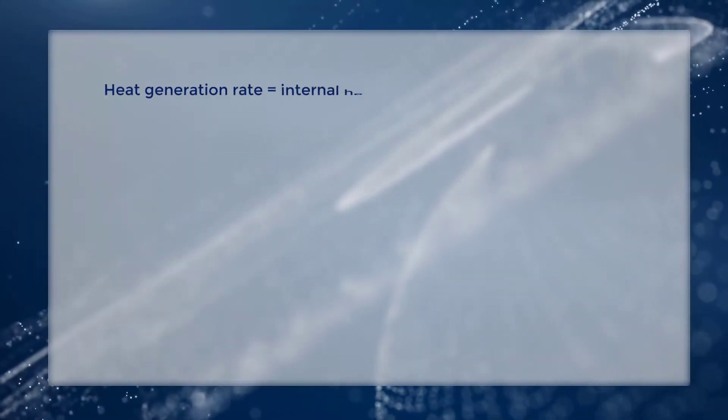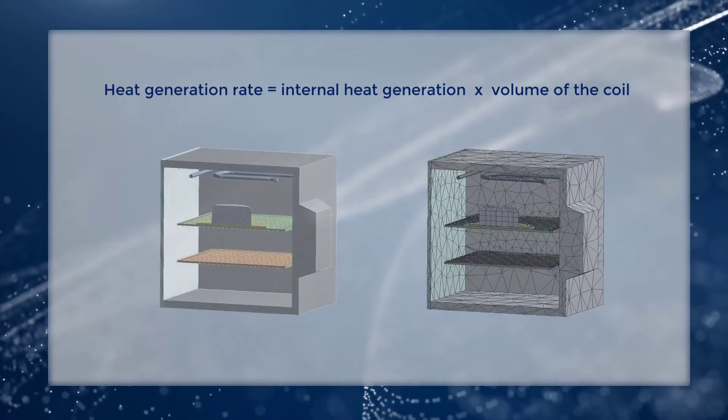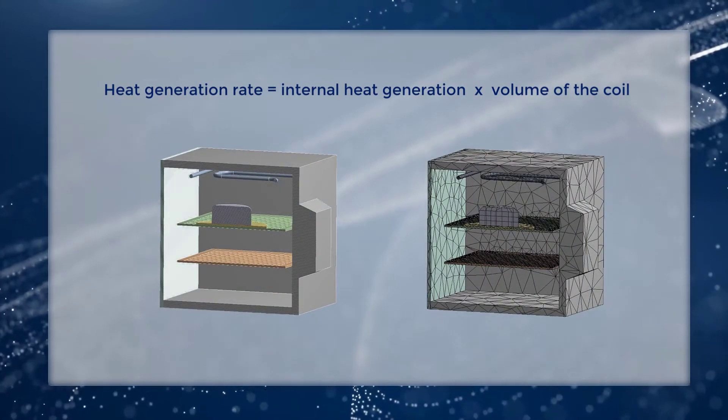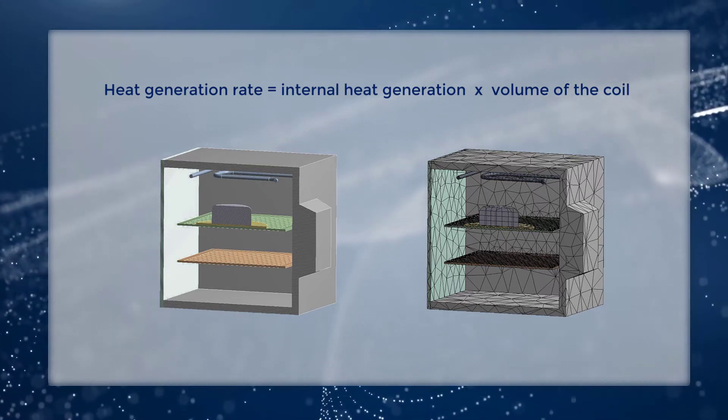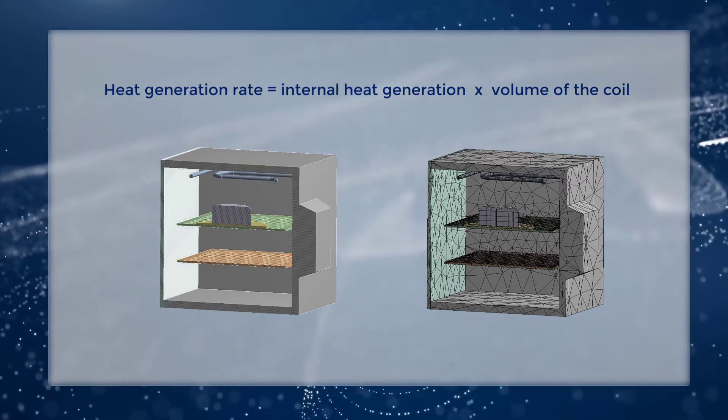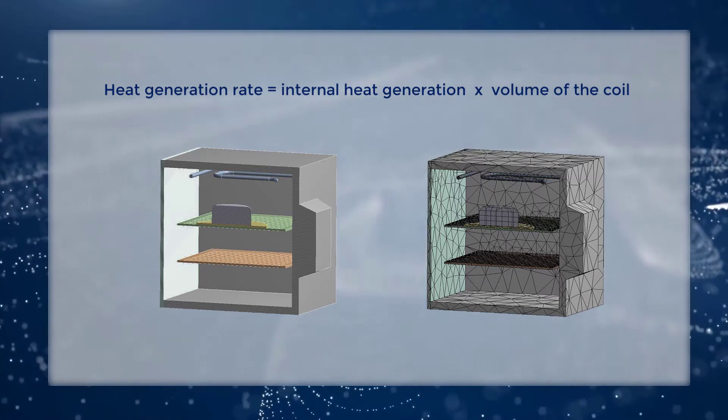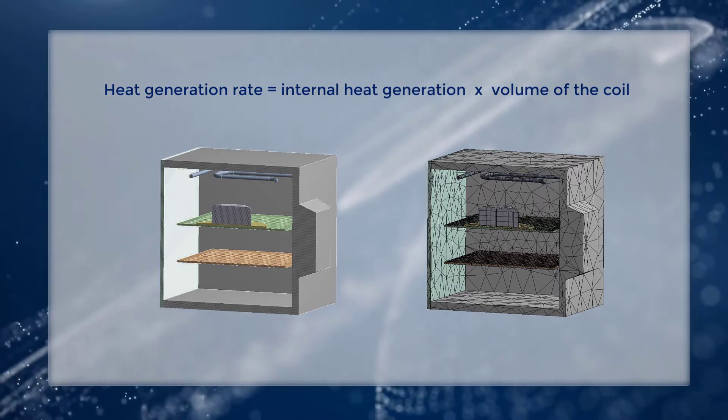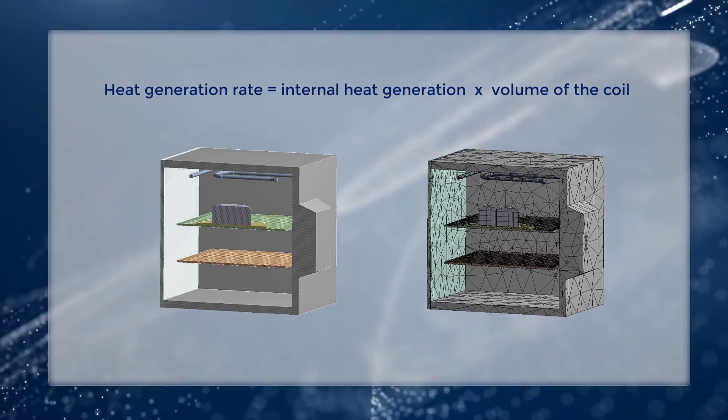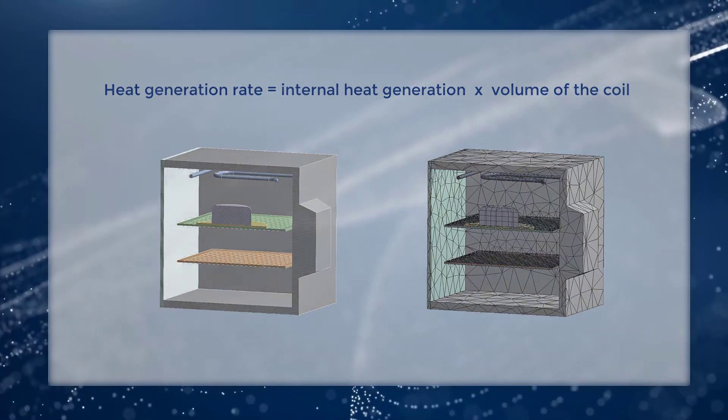The heat generation rate is the internal heat generation multiplied by the volume of the coil. Notice that the meshed volume may be slightly different from the CAD geometry volume if there are curved surfaces meshed coarsely. This is due to the fact that the mesh is faceted geometry, so a coarse mesh may not capture curvature well. The solver does not see the CAD geometry but only the mesh, so it's important that the mesh capture the important geometry details sufficiently.